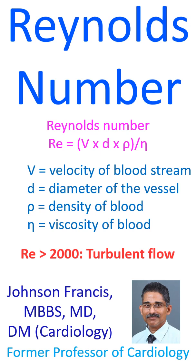Reynolds number Re is equal to V into D into rho by eta. V is equal to velocity of bloodstream. D is equal to diameter of the vessel. Rho is equal to density of blood. Eta is equal to viscosity of blood.